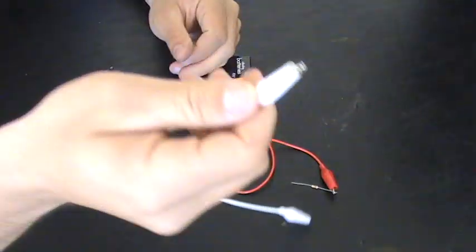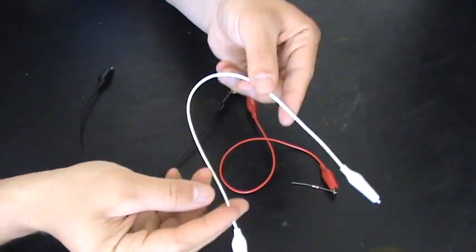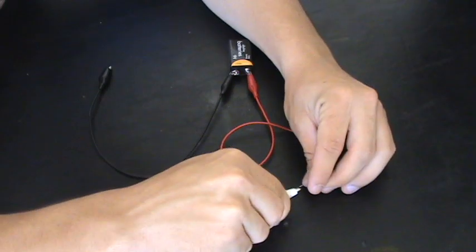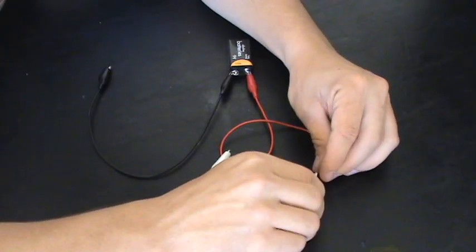Next, grab the white alligator clip, and yours could be any color. I'm just choosing white because it's easy to see on this black table. Hook it up to the other end of your resistor just like this.